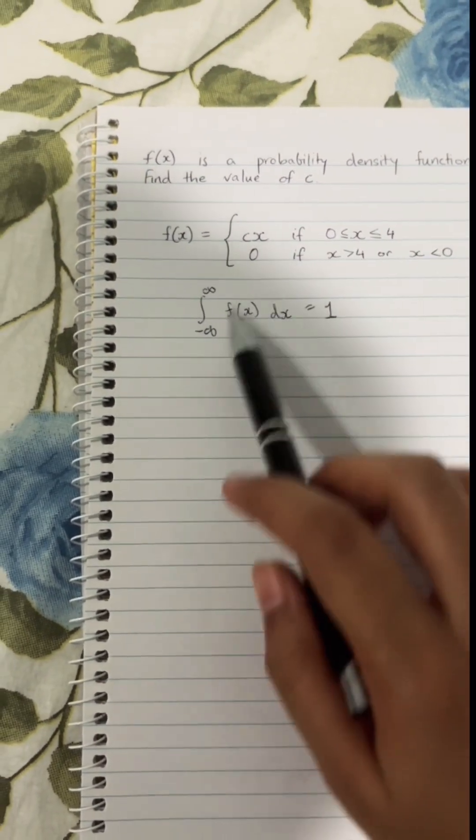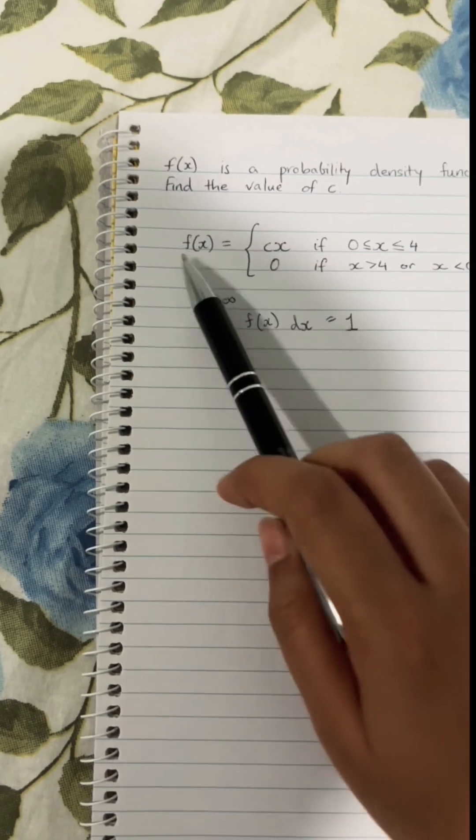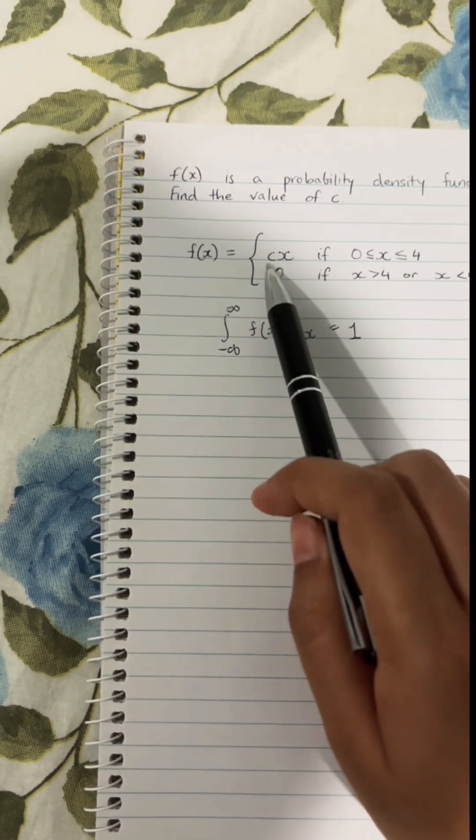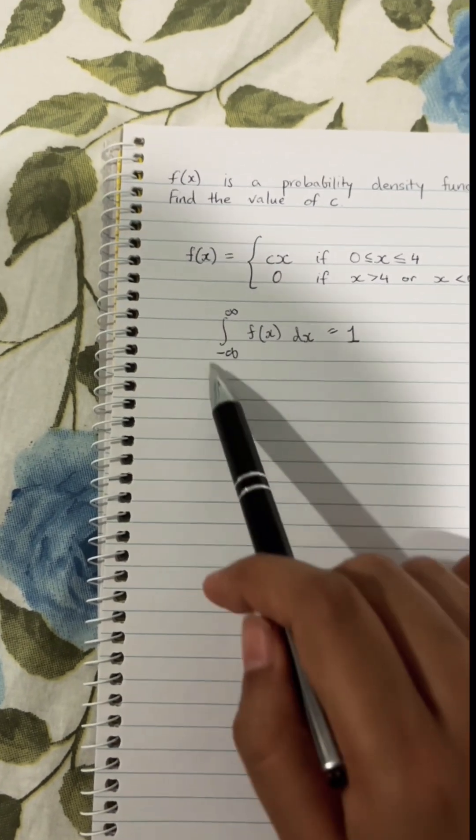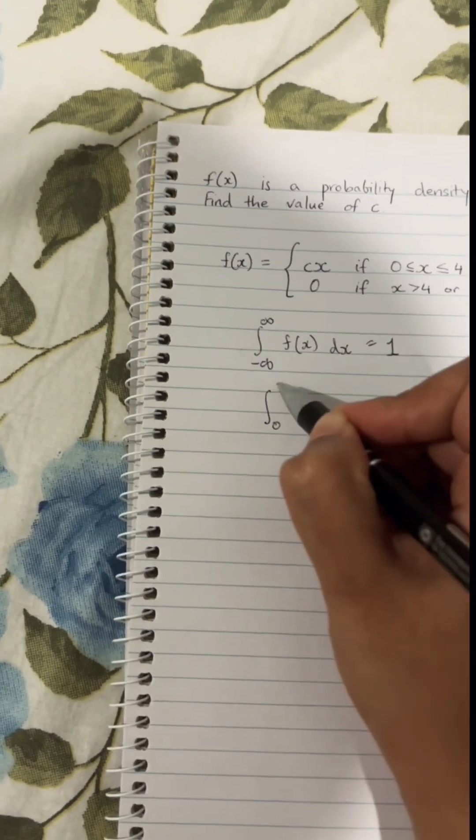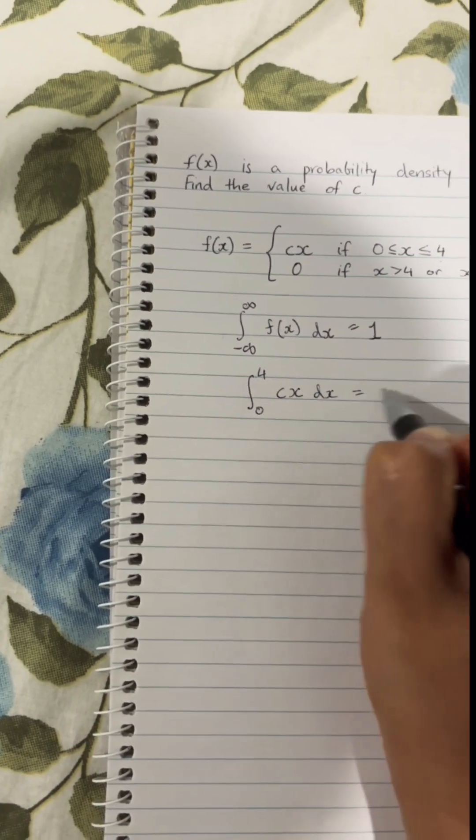So given we know that in this function, the only time when our f of x doesn't equal 0 is between 0 and 4, where it equals cx. So we can write this as the integral between 0 and 4 for cx, and this should equal 1.